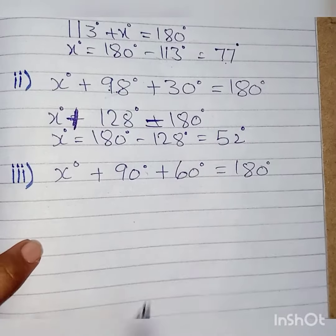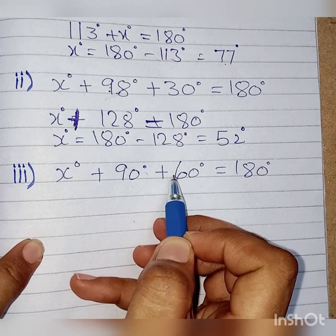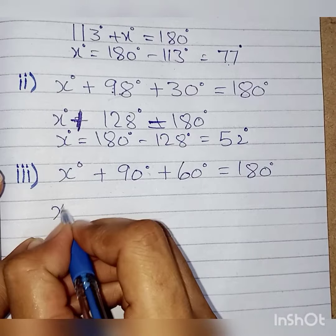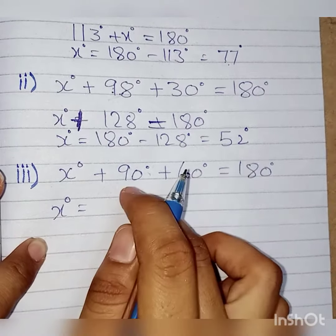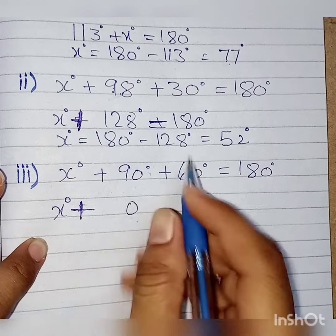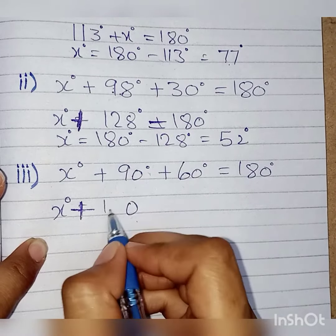Third shape, we have 90 degrees and 60 degrees given. The third angle we have not given. So x degrees plus, when we sum it, we get 0, 6 plus 9, then we get 15. It means that 150 degrees.